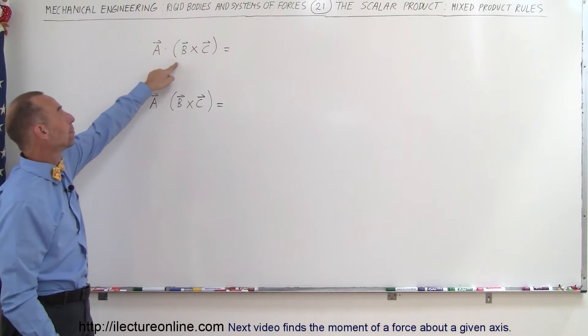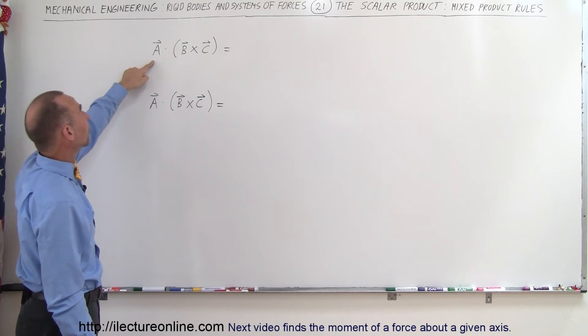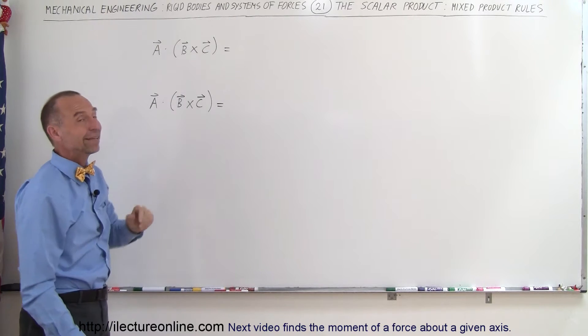For example, what if we have A dot B cross C, that's one way to say it, or the scalar product between the vector A and the cross product of B and C.